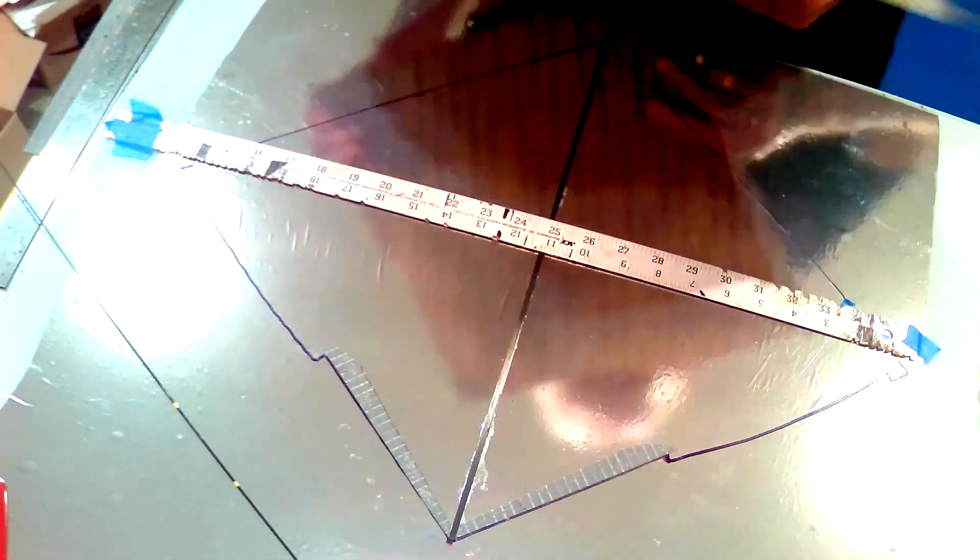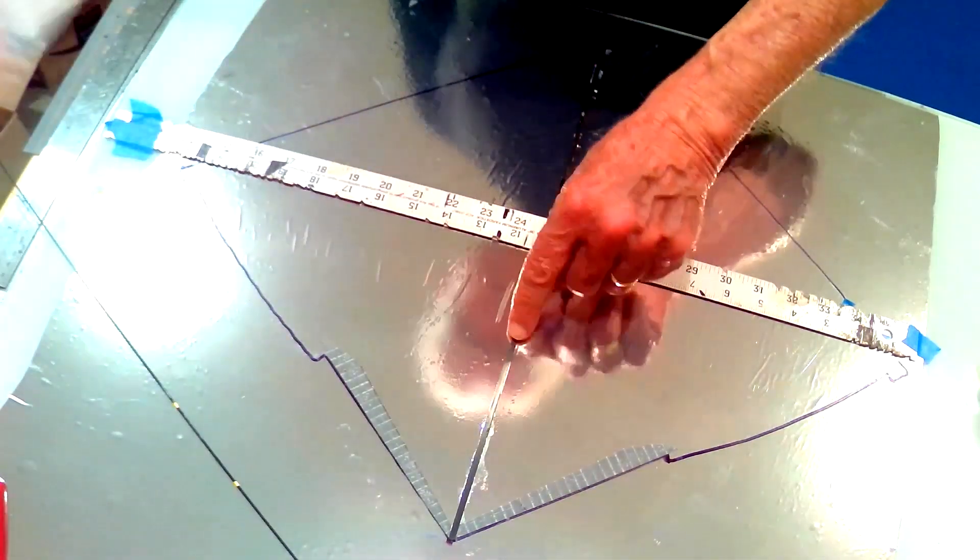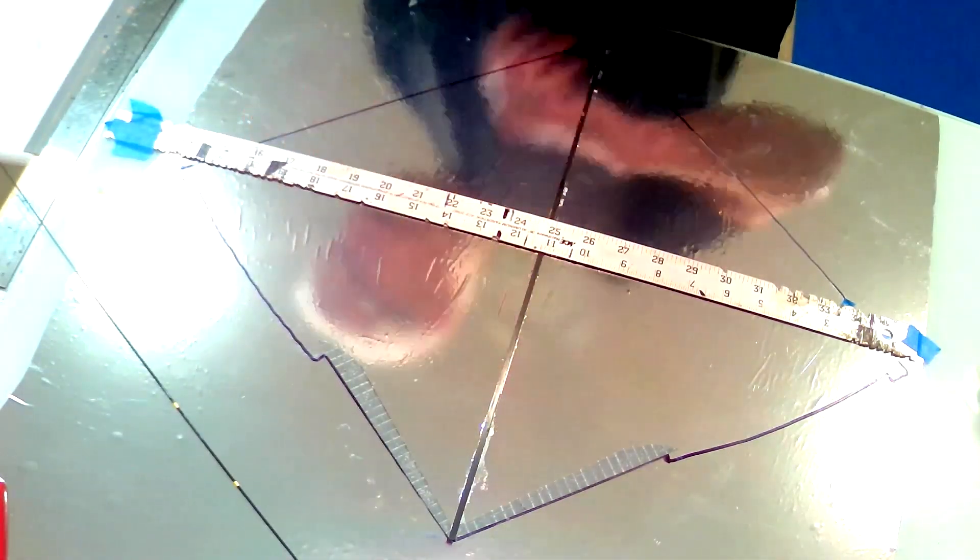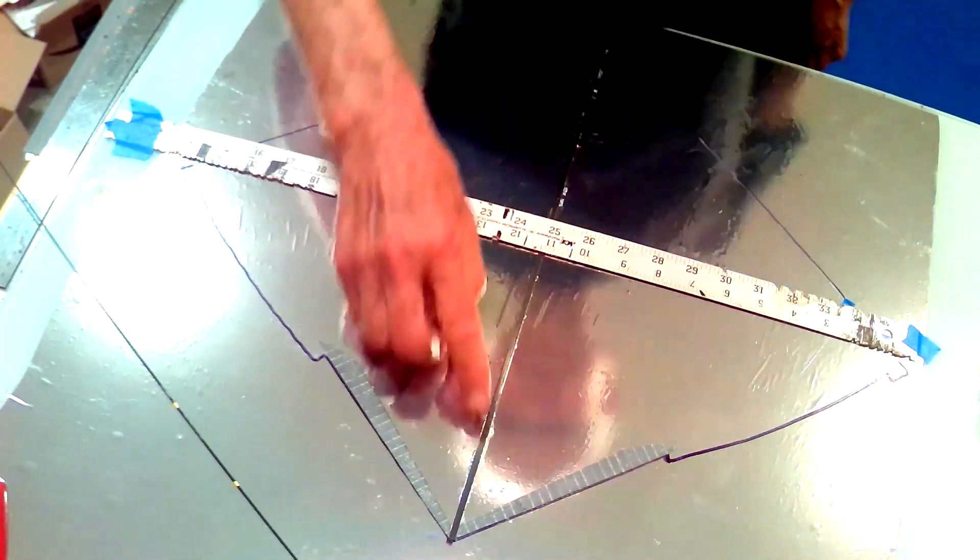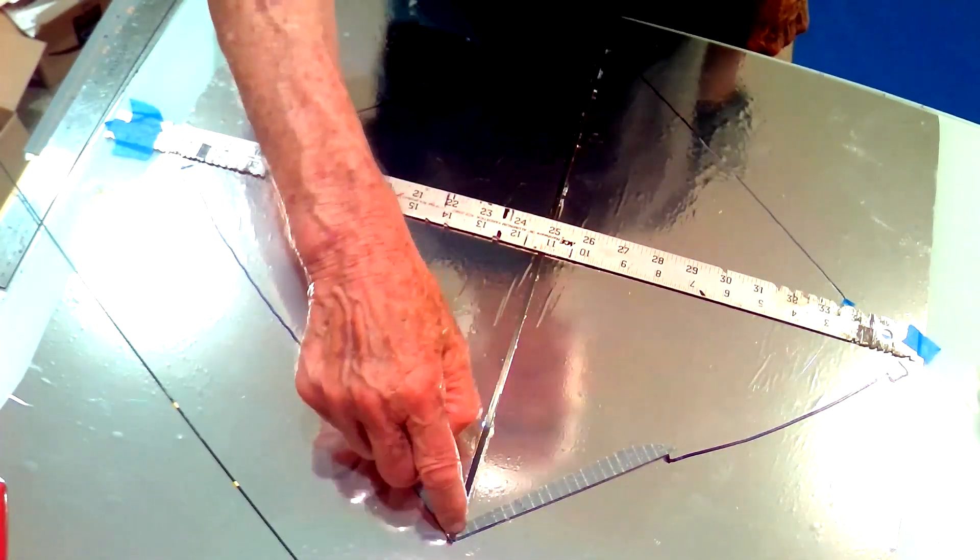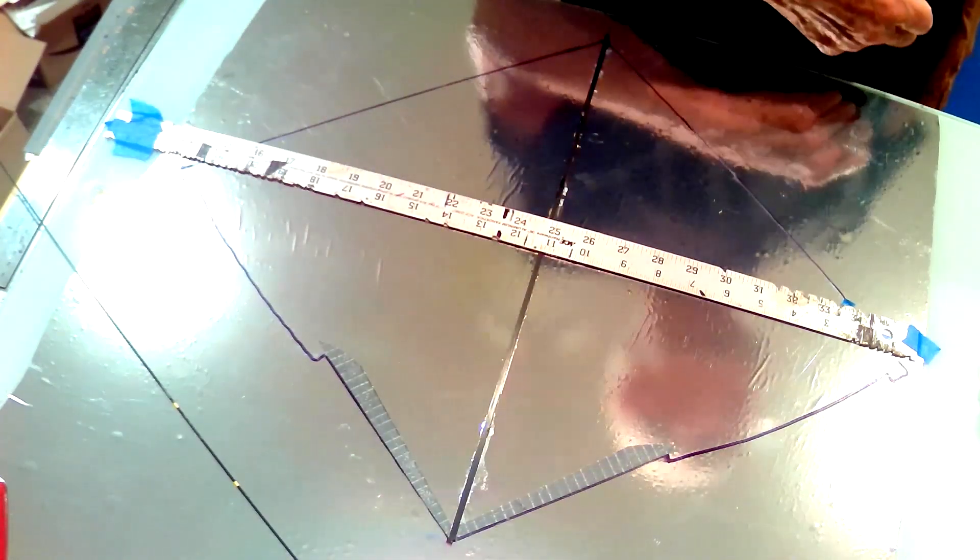I marked the spine and the wingtip line also, and installed the spine. I used contact cement on the backside of the spine, installed it while the cement was wet.